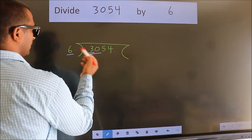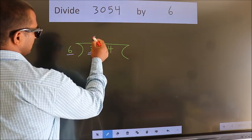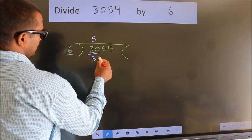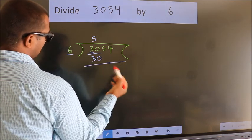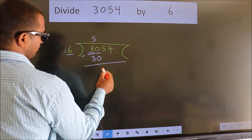When do we get 30? In 6 table, 6 fives 30. Now, we should subtract. We get 0.